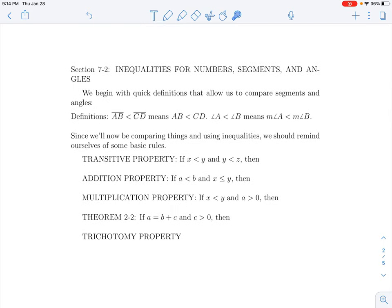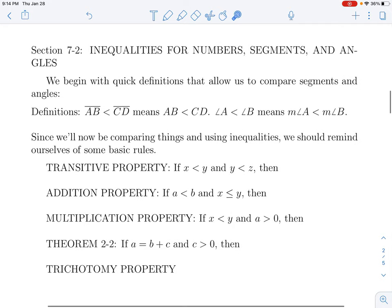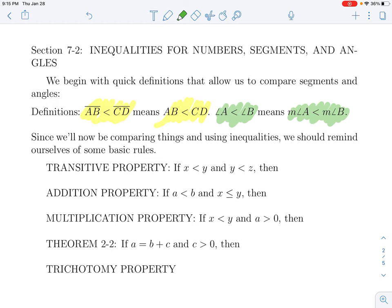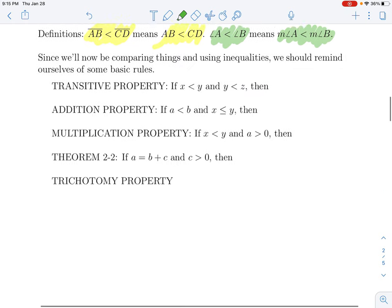So we've had various theorems that talk about things being congruent to each other. When do we know they're the same? Well, it turns out there are going to be some important rules about when we know something is bigger than something else. Now, a lot of the details we're not going to go through. We will have a little bit of just a change in notation.